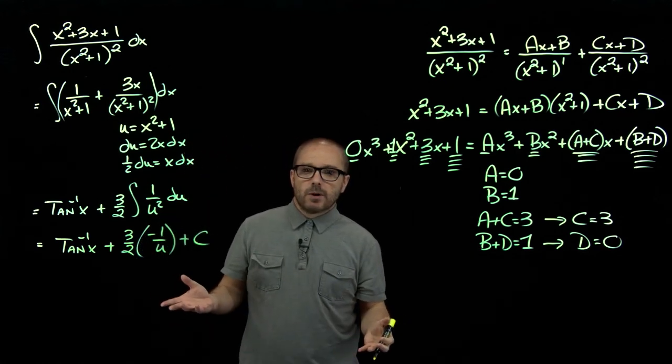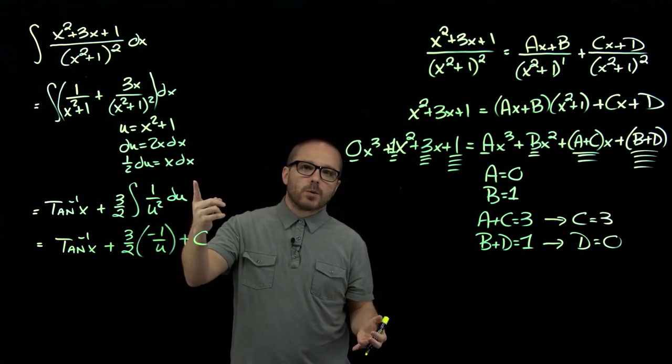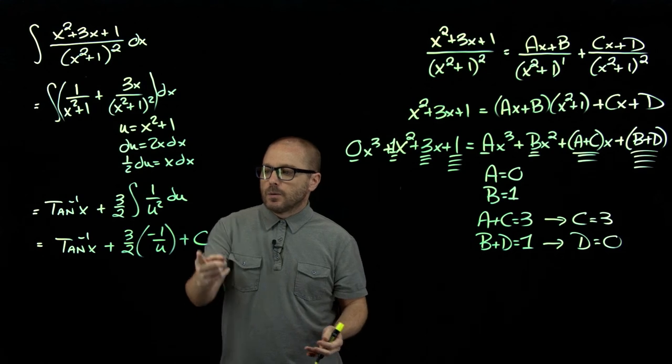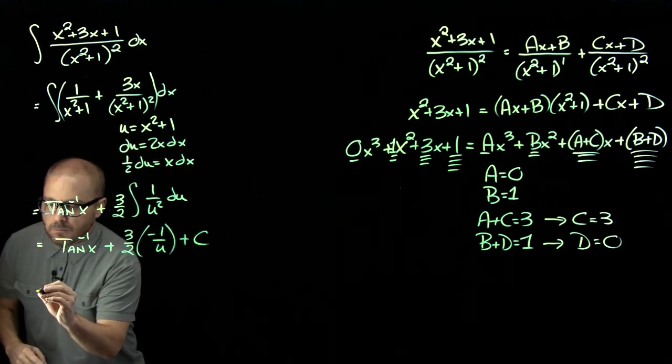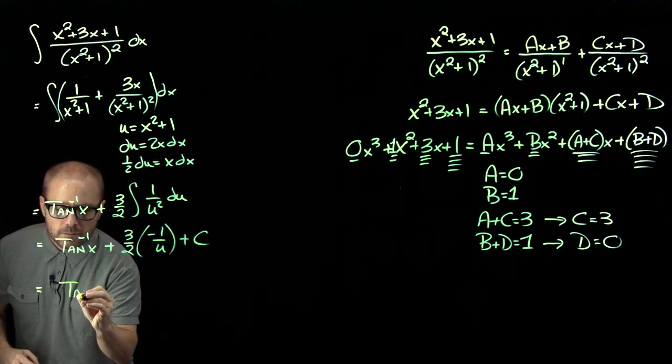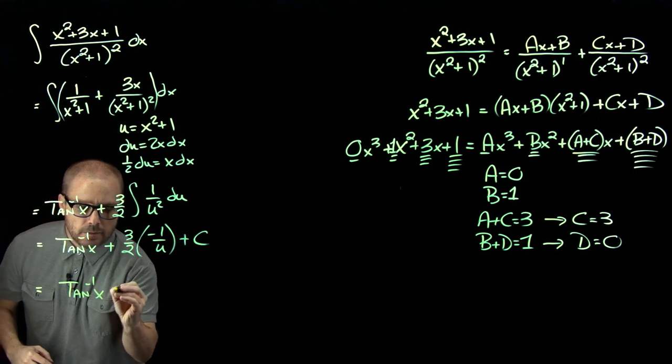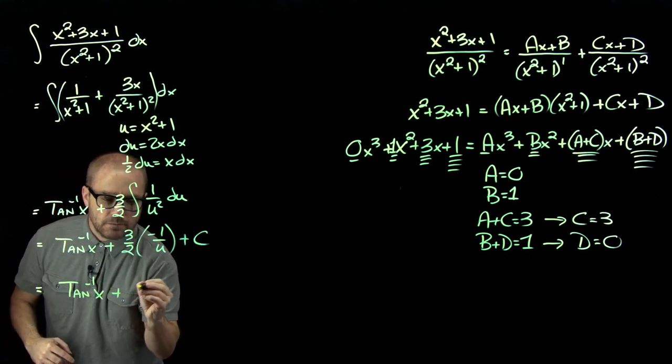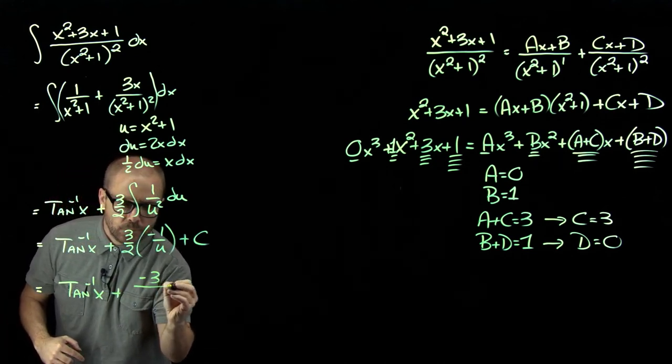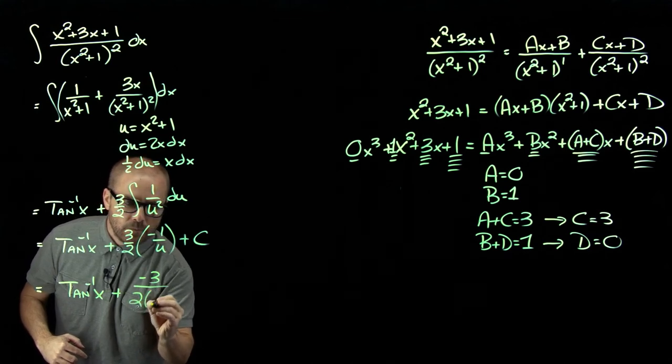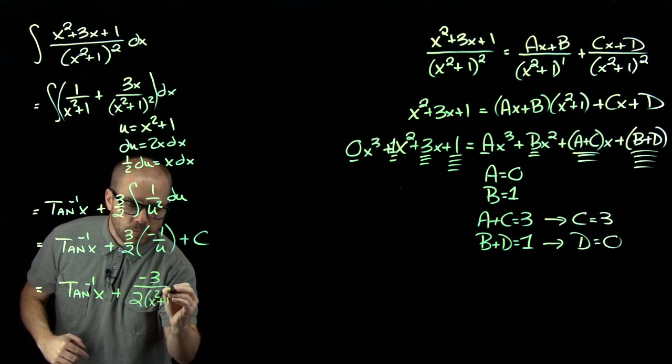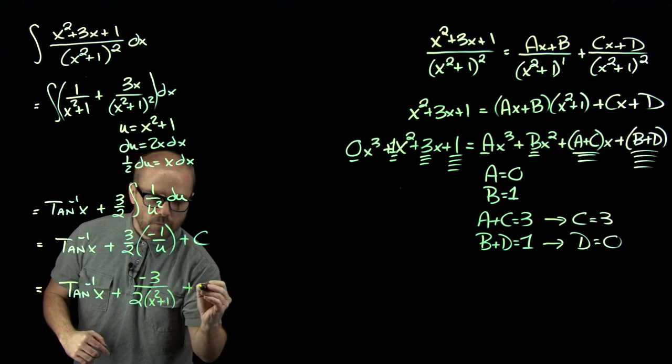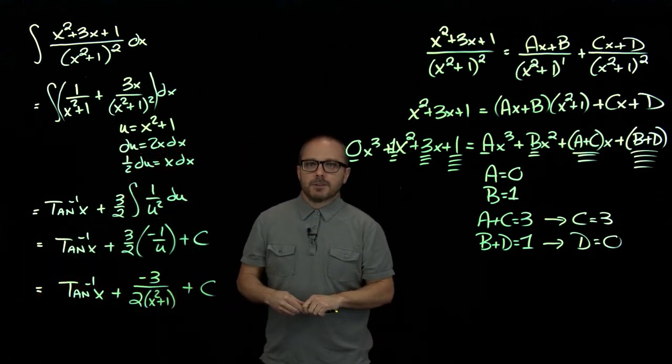And lastly, we want to return to our original variable. And u was x squared plus one. So we'll plug that back in. And there we have it.